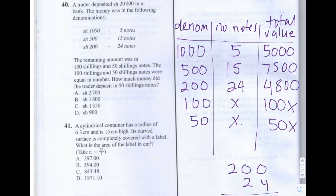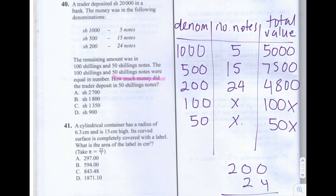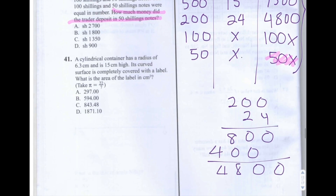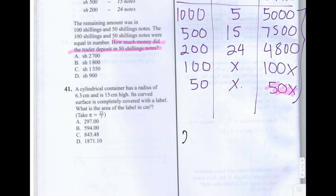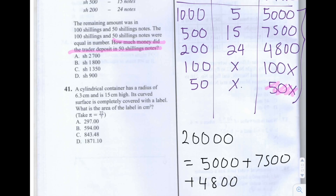We need to solve for x and then work out the value of 50x. We generate an equation by summing all the total values and equating to 20,000. So: 20,000 = 5,000 + 7,500 + 4,800 + 100x + 50x. And 100x + 50x is 150x, so we can write 150x.